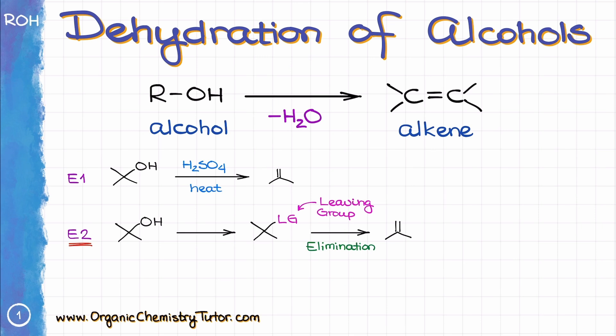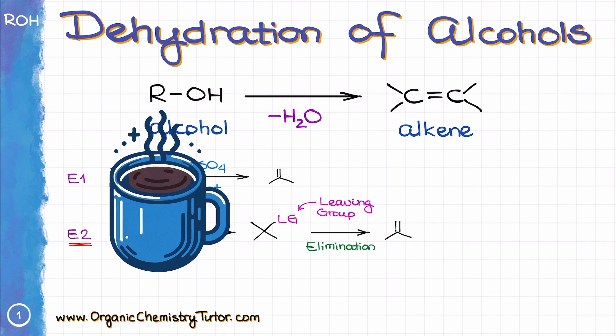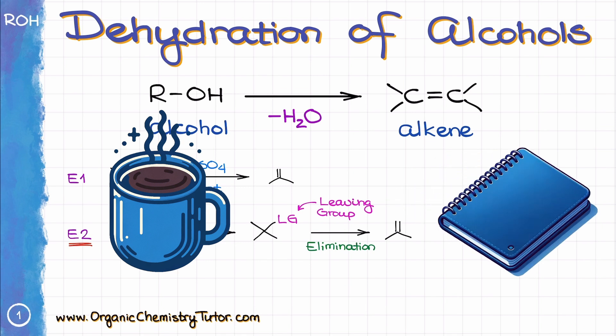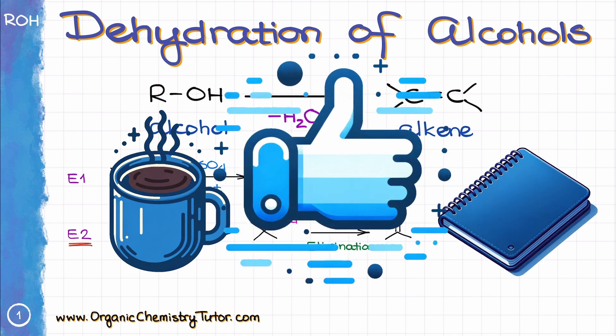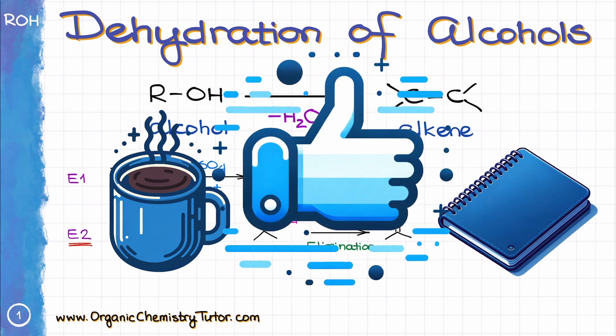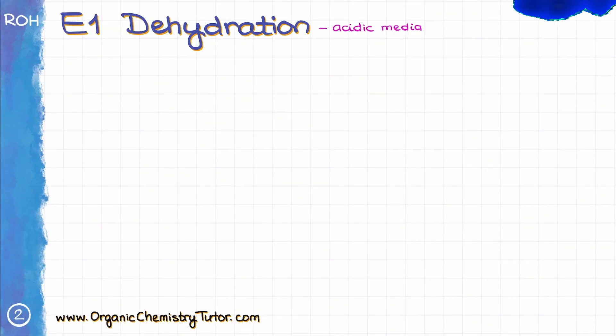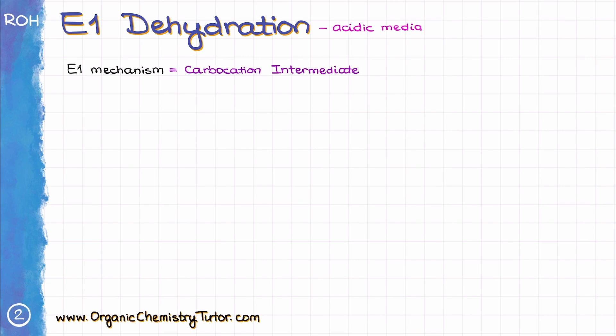In this tutorial we'll go over the typical conditions for each method, the corresponding mechanism, and everything you need to know about the dehydration of alcohols for the test. So grab your cup of coffee, a notebook to work through examples with me, and let's get started. We'll start this review with the dehydration of alcohols in acidic media. This is a fairly typical E1 reaction which proceeds through the formation of a carbocation.